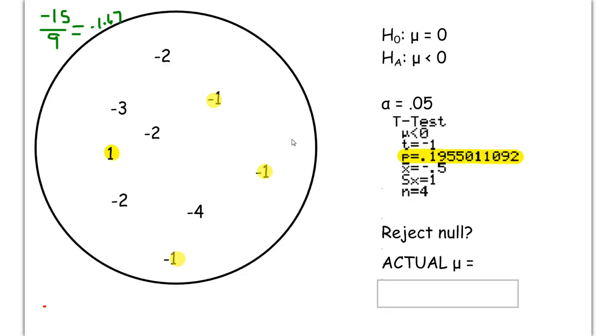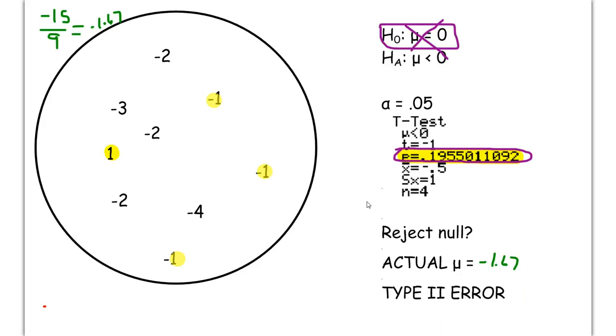The only problem is, is if the real mean is negative 1.67, and our null hypothesis was mu equals 0, that means that the null hypothesis is clearly wrong. The actual mu is not 0. It's something quite a ways away. So the null hypothesis is wrong. We should reject. However, we didn't. Because of our large p-value, we decided to not reject. That type of error, that type of mistake, logically is called a type 2 error.